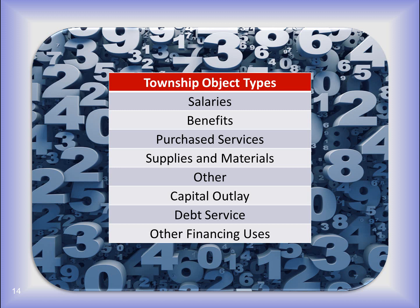For wages, I would select an object account from the salaries type. The employer share of Medicare, retirement, and other employee benefits would be selected from the benefits type. When paying for a service such as repairs, utilities, or audit, I make the object selection from the purchase services type. The purchase of supplies would use object codes in the supplies and materials category. Note the other object type — this type should only be used when none of the other object types apply.